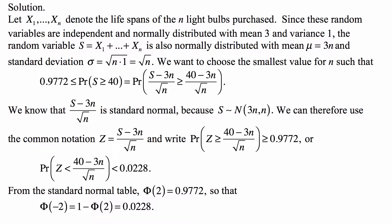Or probability that Z is less than (40 - 3n) / √n is less than 0.0228. From the standard normal table, or also there is software that gives you these values on the test, the standard normal calculator, Φ(2), the cumulative distribution function of a standard normal random variable evaluated at 2, is 0.9772.